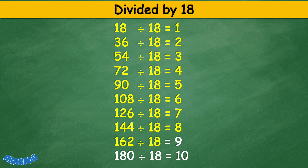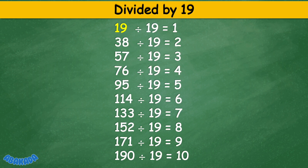Divided by 19: 19 divided by 19 equals 1, 38 divided by 19 equals 2, 57 divided by 19 equals 3, 76 divided by 19 equals 4, 95 divided by 19 equals 5, 114 divided by 19 equals 6, 133 divided by 19 equals 7, 152 divided by 19 equals 8, 171 divided by 19 equals 9, 190 divided by 19 equals 10.